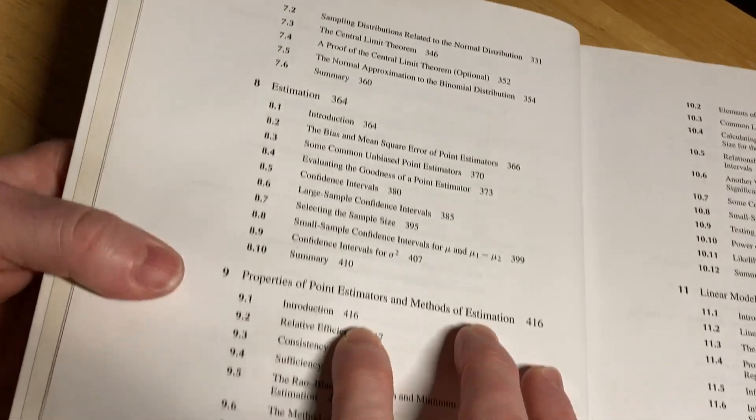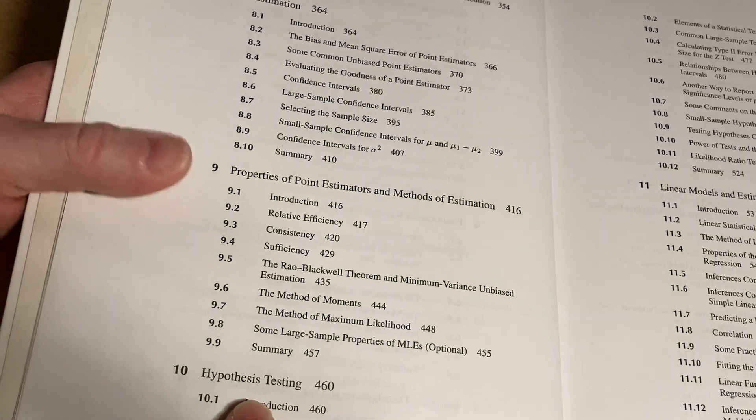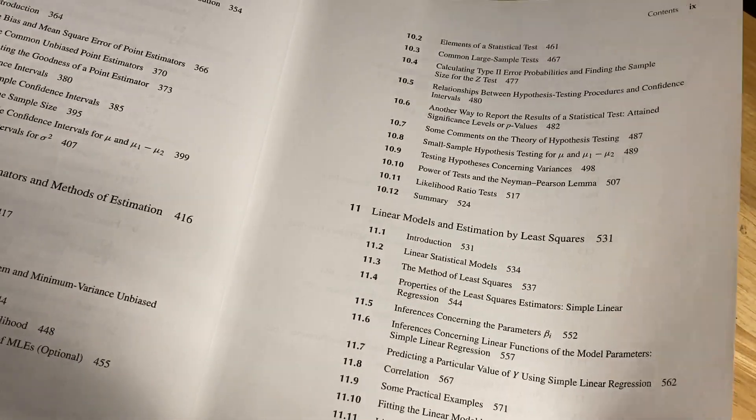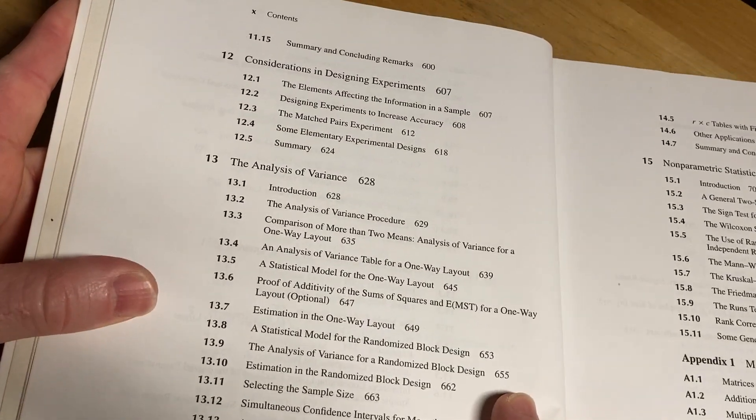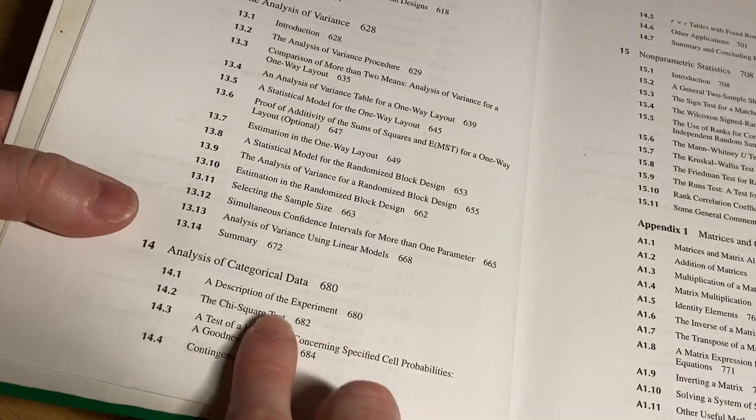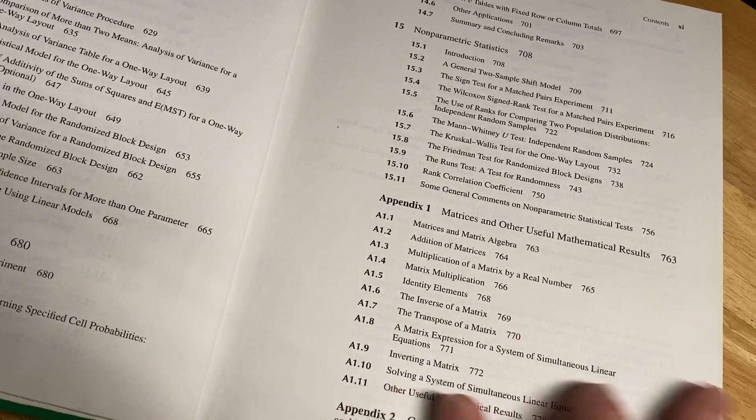Estimation. Properties of point estimators and methods of estimation. Hypothesis testing. Also very important stuff. Linear models and estimation by least squares. Considerations in designing experiments. The analysis of variance. Analysis of categorical data. Non-parametric stats. And then it's got some appendices.